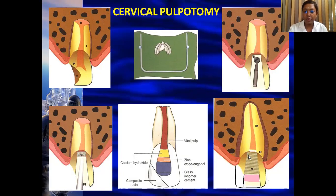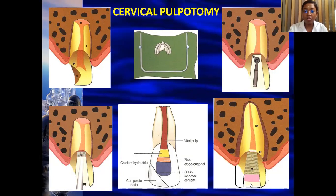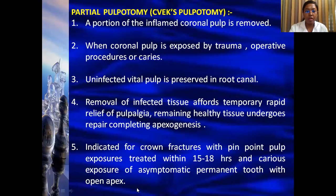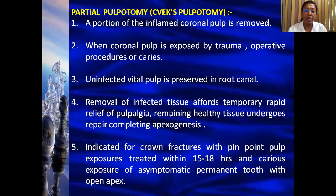At the level of the CEJ you place your medicament — which can be calcium hydroxide or MTA as per your choice — followed by placement of GIC as a base, over which composite is placed as the final restoration.